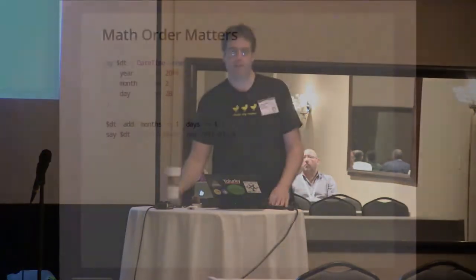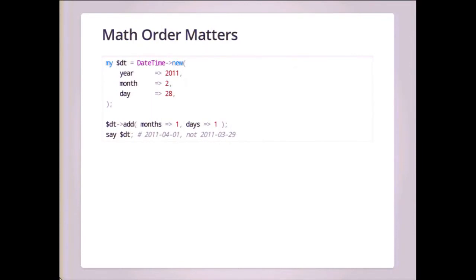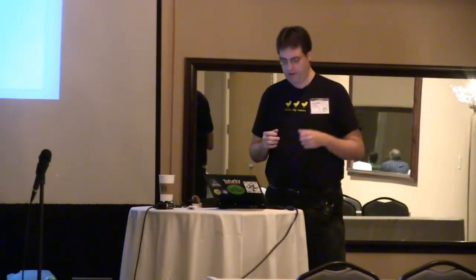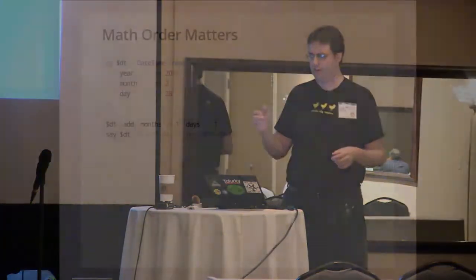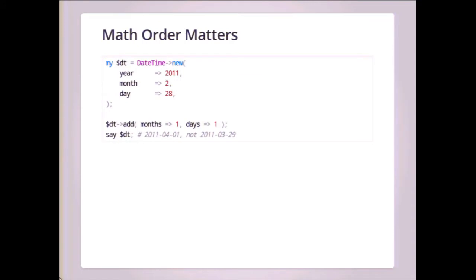Also, the order of math matters. For a reason I no longer remember, I picked a fairly arbitrary order which is documented: if you add months and days together, it adds the days first and then the months. So starting with February 28th, 2011 — we add one day to get March 1st, then add a month to get April 1st. If we did it the other way and added the month first, we'd get March 28th, then add a day to get March 29th. The order of operations matters and is well documented. The solution: if you want to control the order, just call add multiple times in a row.